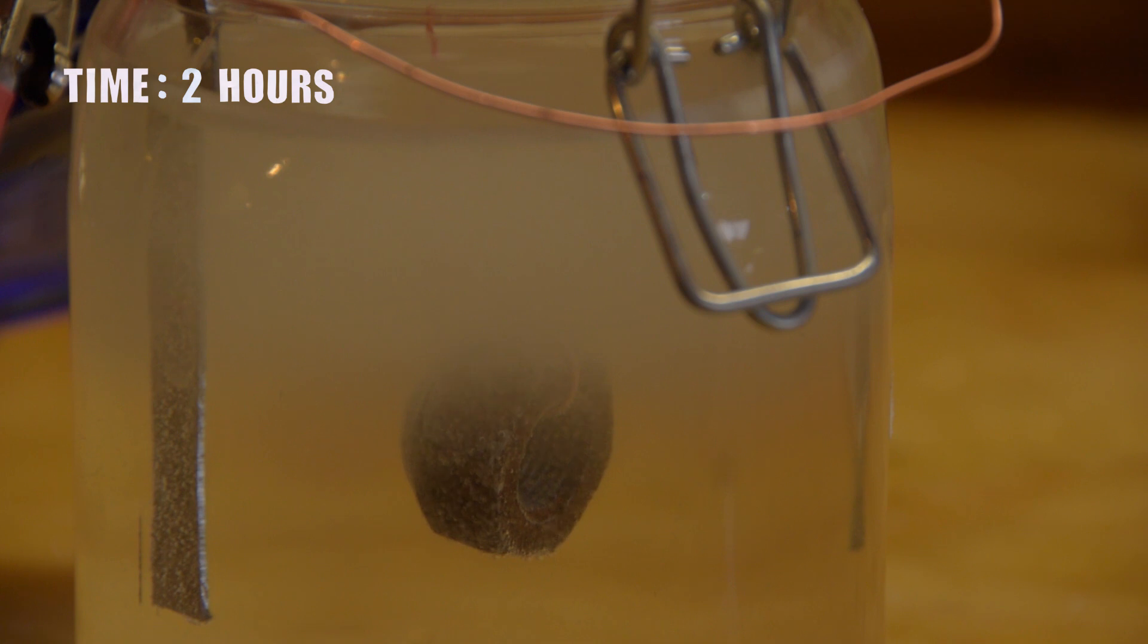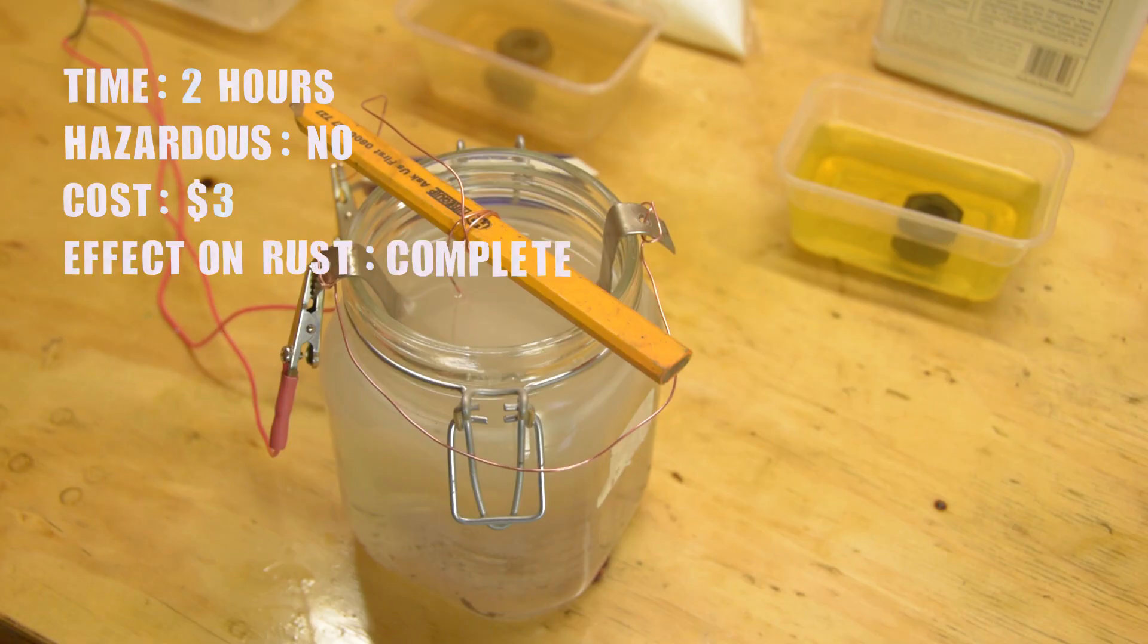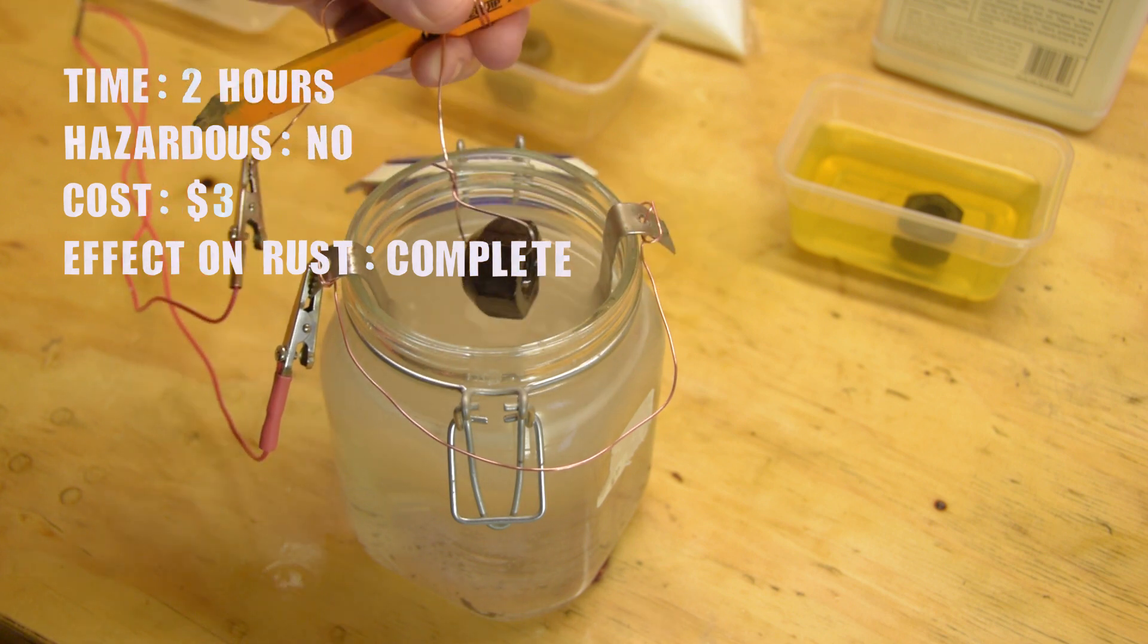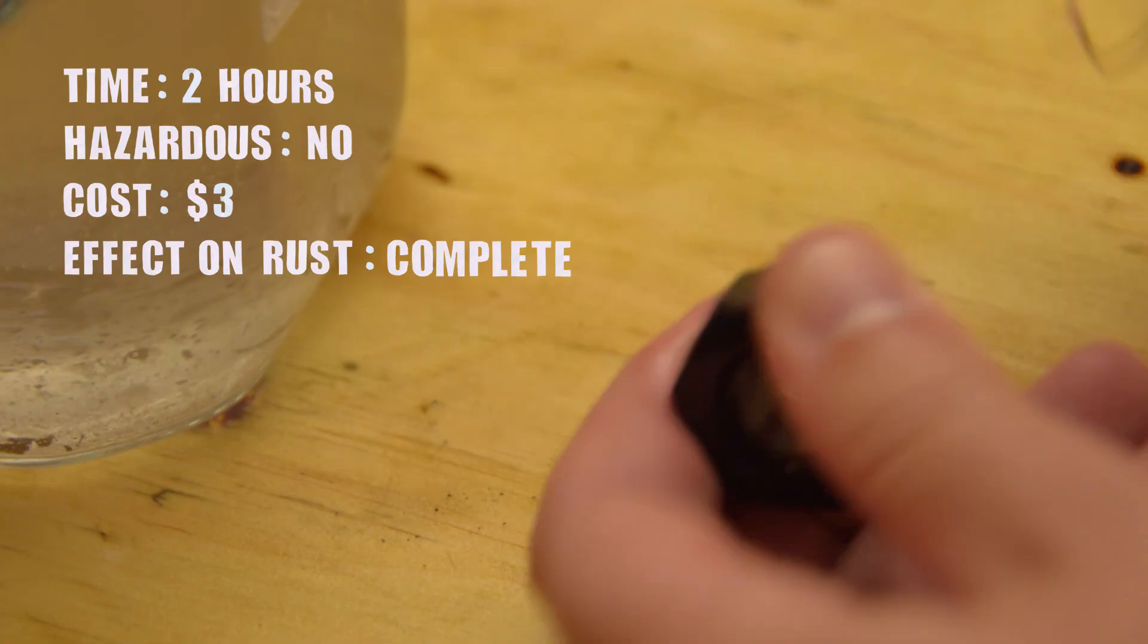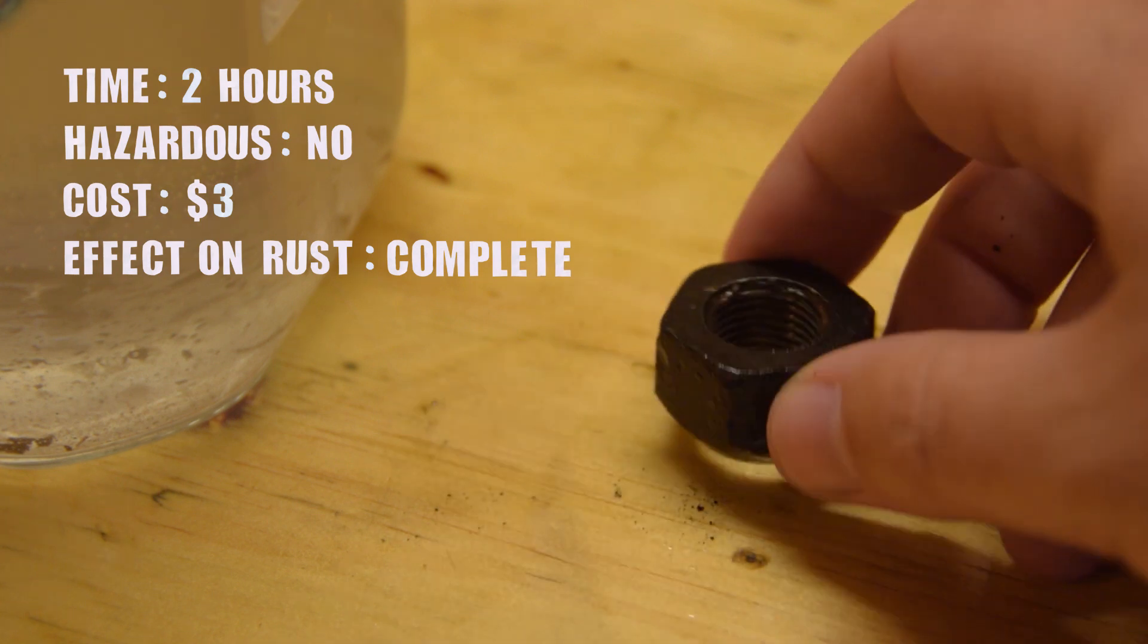Derusting this nut took about two hours, but that will vary depending on the size of your part, and the amperage. This isn't hazardous. You could give yourself a shock, I guess. Hydrogen is flammable, and technically there is a risk of explosion. But at this scale, I doubt we're going to get anywhere near the concentration of hydrogen gas needed to cause an explosion. It's cheap. Assuming you have all of the equipment around the house, it costs next to nothing. Let's say three dollars for the sodium carbonate. It is very effective at removing rust. The only other method that works as well is evaporust.